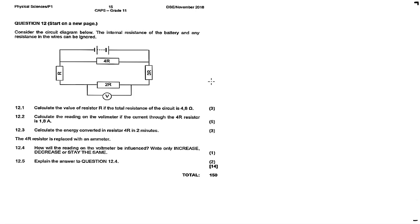Question 12 — the last question for this question paper, November 2018 Paper 1 Physics. Consider the circuit diagram below; the internal resistance of the battery and any resistance in the wires can be ignored. There is a 4R resistor, R, 2R, and 3R, a power source, and a voltmeter. The 2R and 3R are connected in series, and against the 4R there is a parallel connection.